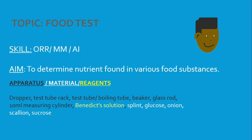We'll be looking at the presence or absence of reducing sugar. The skills that can be tested are ORR and MMAI, and teachers are reminded only two skills are to be tested for any particular experiment. The aim is as stated; apparatus, materials, and reagents are color-coded below.